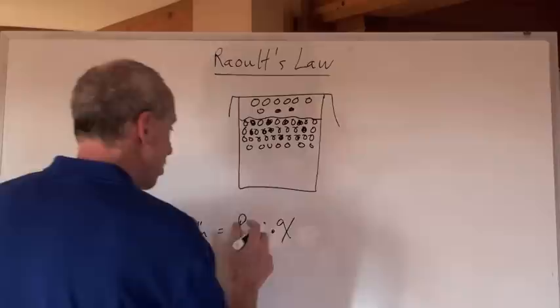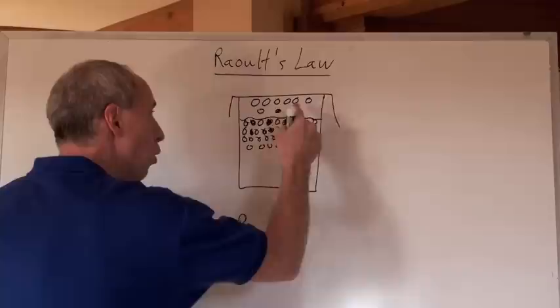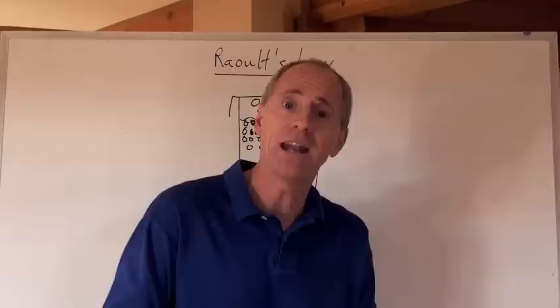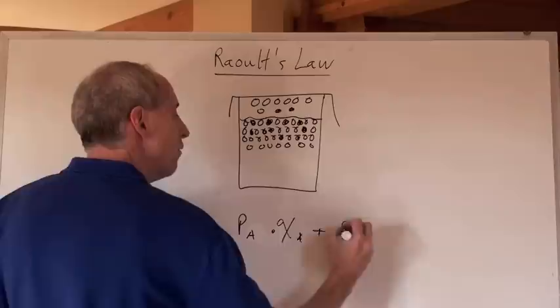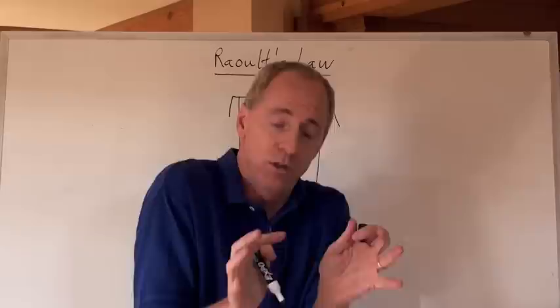And so, if both of them evaporate, you just take what their pressures are normally, the pressure of solution A normally, and multiply by its new mole fraction, now in solution, with B included in that, if you have to know the moles of A and the moles of B, and then you just add that, because Dalton's law of partial pressures, remember, says you just add one pressure to another.